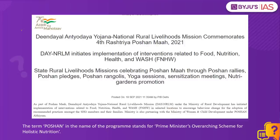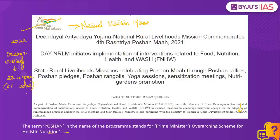This article in the PIB today has a reference to POSHAN Abhyan. POSHAN Abhyan is also known as the National Nutrition Mission and stands for Prime Minister's Overarching Scheme for Holistic Nutrition. It is the world's largest nutrition program for children and mothers, aimed at removing malnutrition from the country by 2022. It aims to reduce stunting and wasting among children by 2% a year — 6% by 2022 — and anemia among children, adolescent girls, pregnant women and lactating mothers by 3% a year, totaling 9% by 2022.